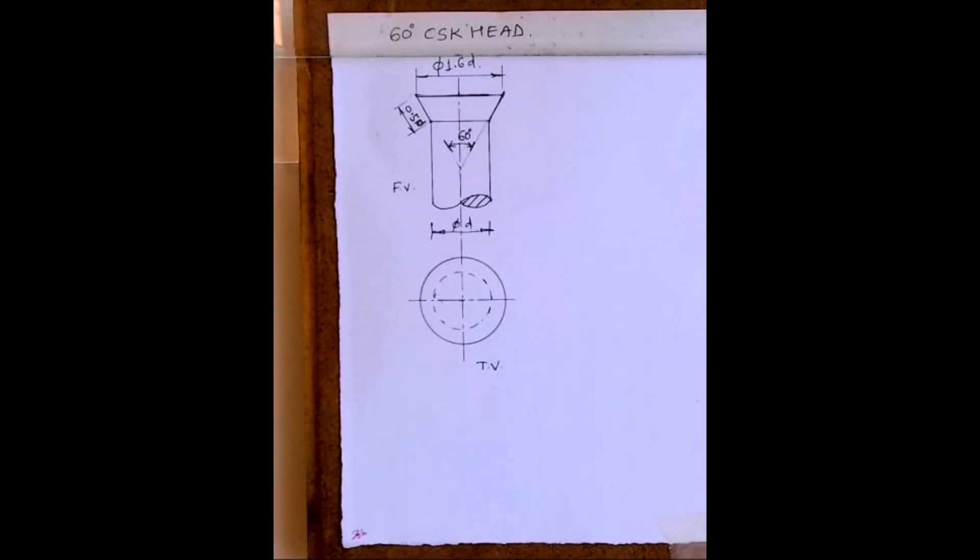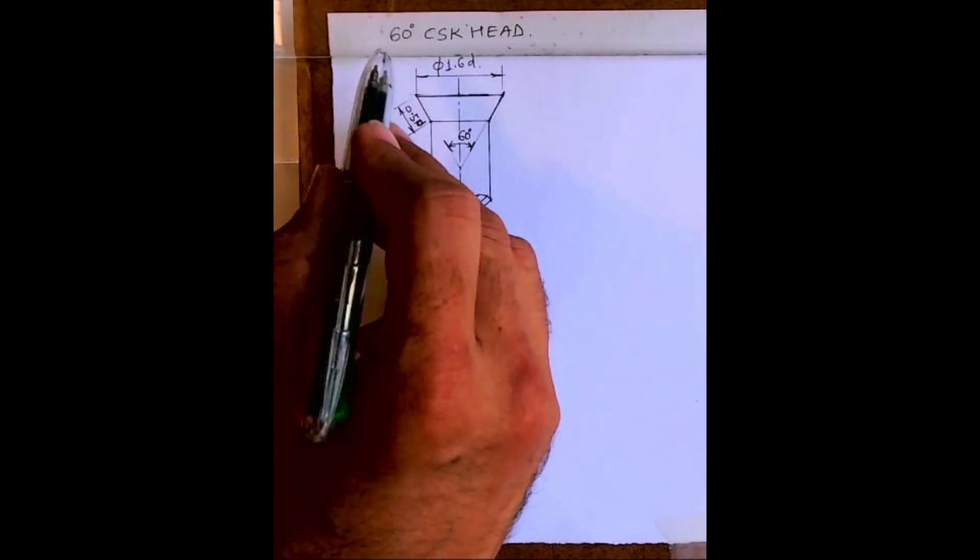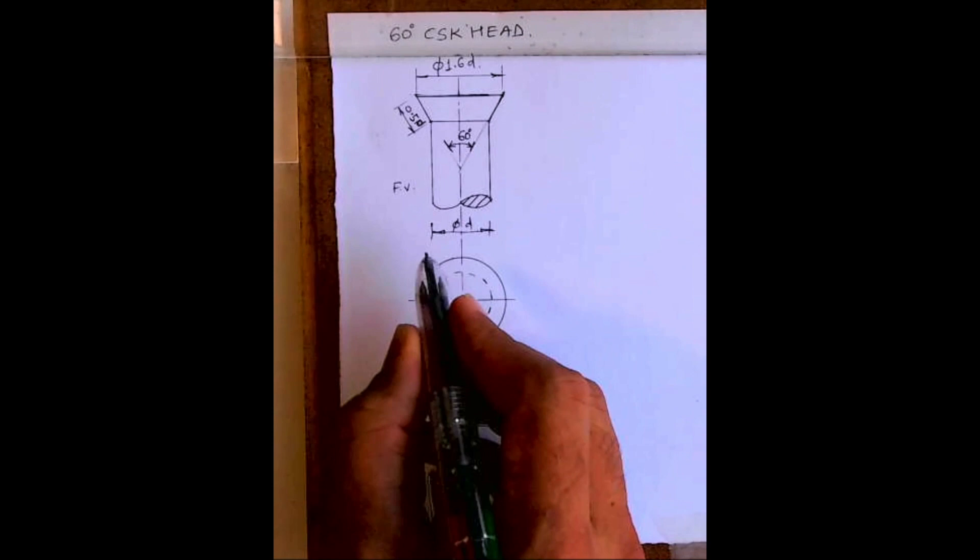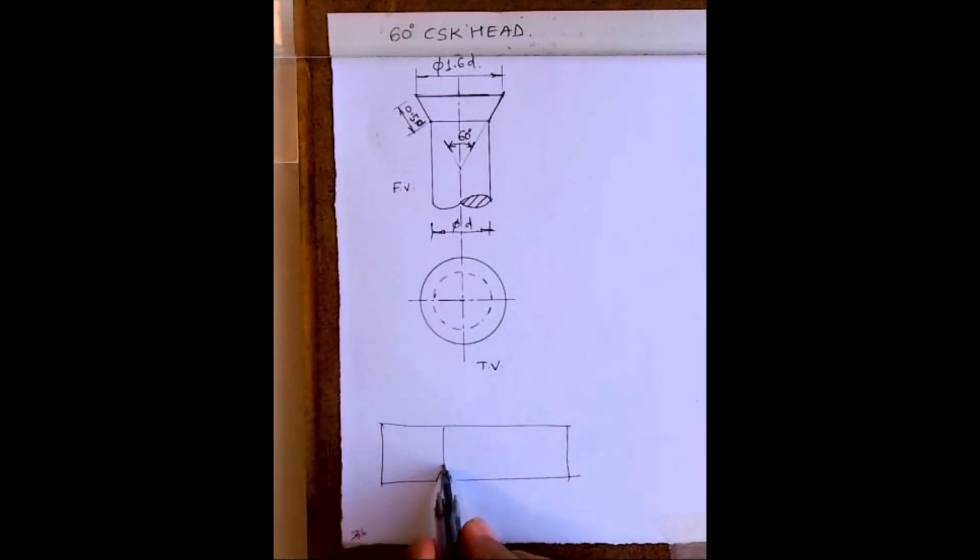Welcome to technical drawing. Today we are going to draw a 60 degree CSK head rivet. First we will draw the front view and top view. Before that we will draw a box and find out the value of d, 0.5d, and 1.6d.